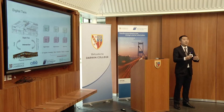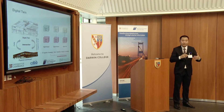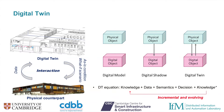A digital twin features a two-way data flow between the digital representation and the physical counterpart. It basically follows what we call the DT equation, based on prior knowledge, insight gained from data, and helped by semantics — so that better decisions can be made with knowledge updated increasingly.